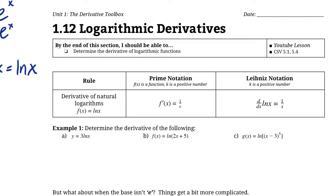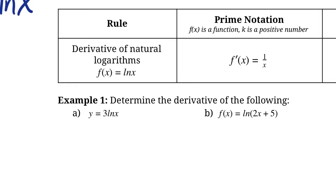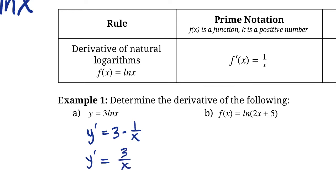Let's apply this pattern to this first question: y equals 3 ln x. Just like always, we can pull the 3 out of the derivative because it's a constant multiplied by a function. So y prime is equal to 3 times the derivative of ln x, which is just 1 over x. We can simplify this a tiny bit — it's just 3 over x.